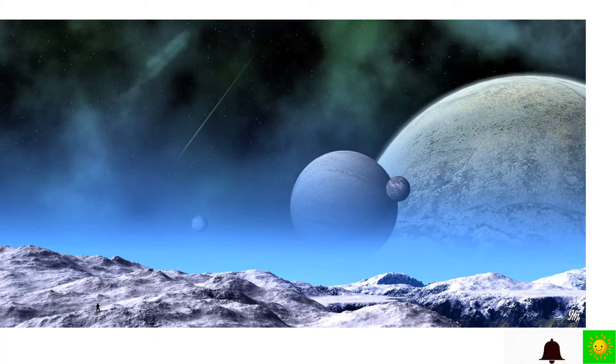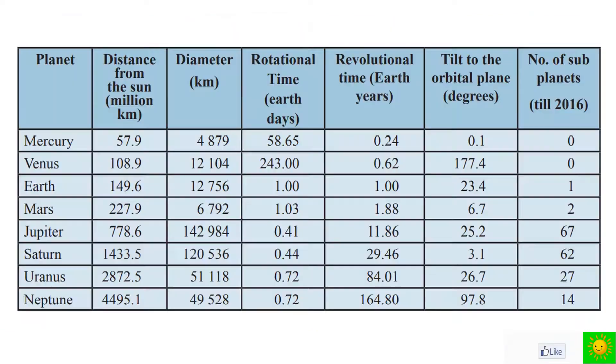Here, let's see some information about the planets of our solar system. Now you can see the planet distance from the Sun in million kilometers, diameter of the planet in kilometers, rotational time in Earth days, revolution time in Earth years, tilt to the orbital plane in degrees, number of sub-planets till 2016. Observe the table. You can get such ideas.